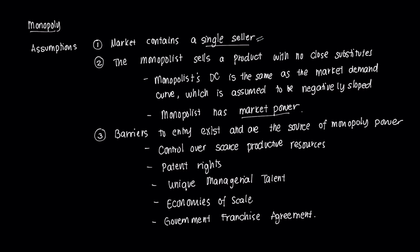There's only one provider of a particular good or service. And that provider, which we refer to as the monopolist, will sell that good or service or that product. And that product has no close substitutes. If you recall our assumption with a perfectly competitive market, each firm sells a homogenous good. In this case, there's only one firm in the market. If you think of popular examples of monopolies, they're like public utility companies that provide electricity or broadband connections. These companies have a sort of control over one good or service.